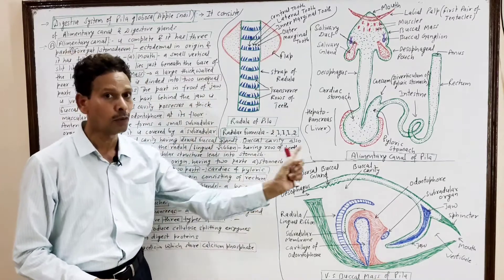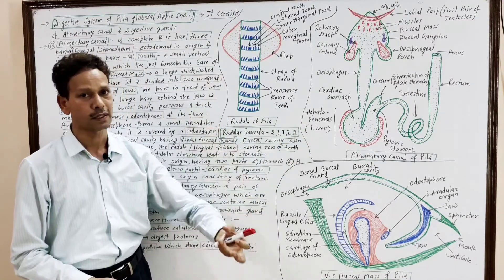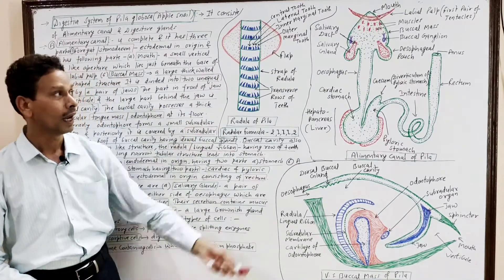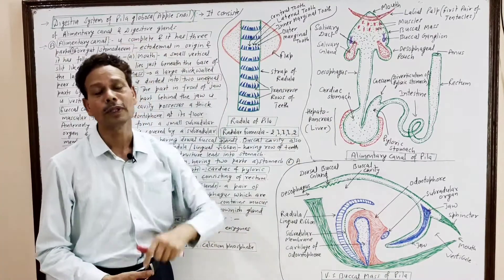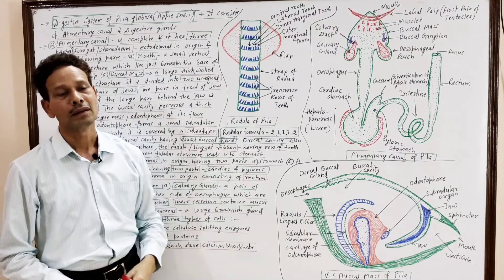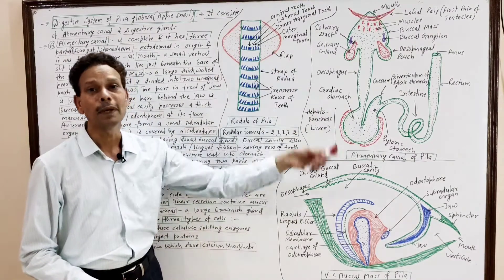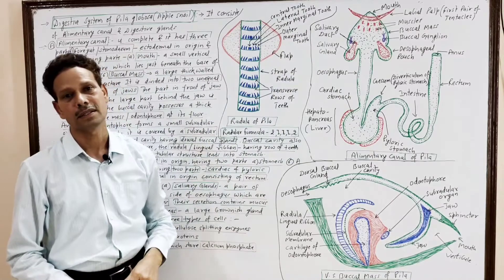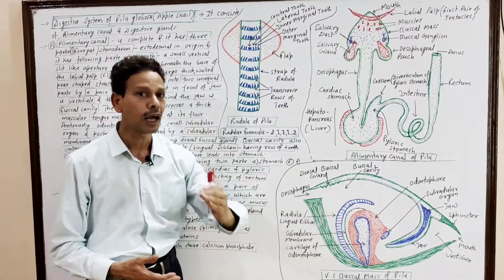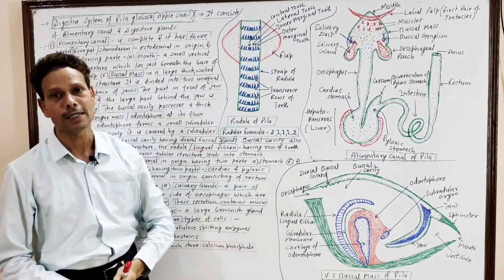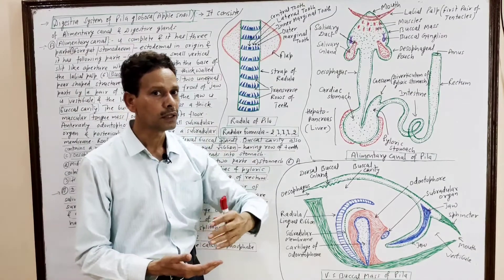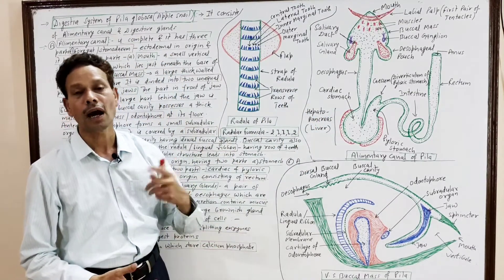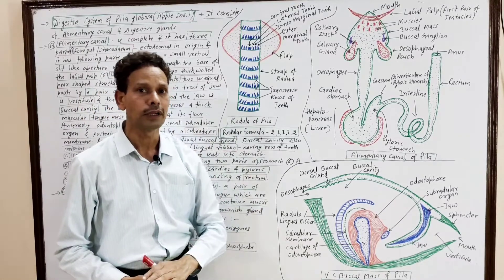In the case of Pila globosa, which is a mollusk and a soft-bodied, shelled snail, the alimentary canal is complete, having both openings — mouth and anus. That alimentary canal is divided into three parts: the foregut (stomodeum), the midgut (mesenteron), and the hindgut (proctodeum).